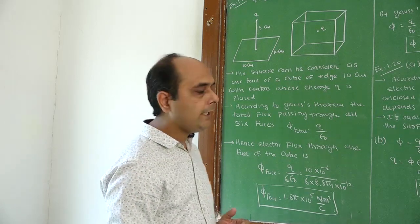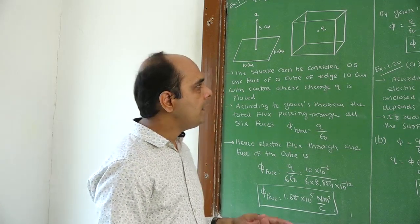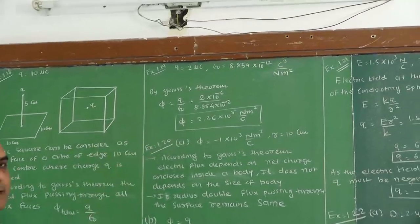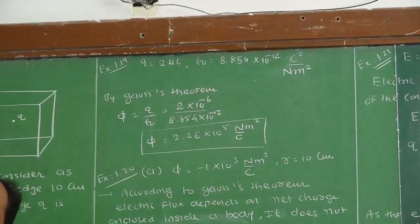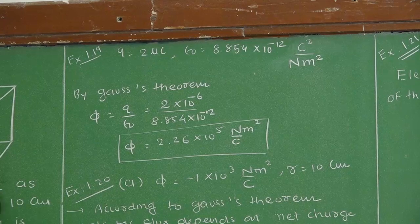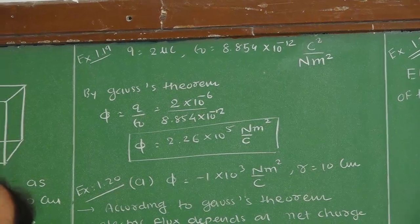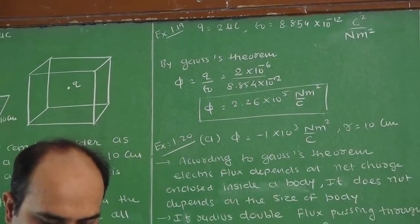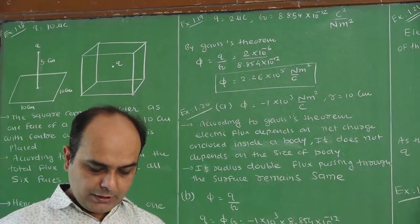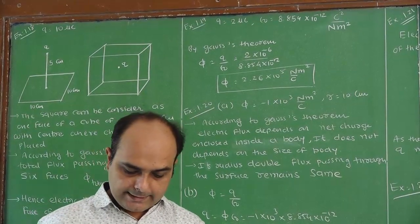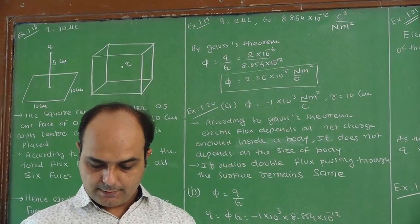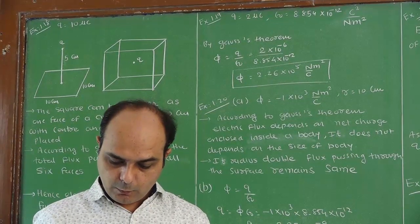Now example number 18 is completed. We are moving on the next example, that is example number 19. Again the same equation can be used through Gauss theorem: flux equals q by epsilon 0. The question of example number 19 is: a point charge of 2 microcoulomb is at the center of a cubic Gaussian surface of 9 cm on edge.